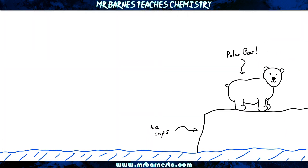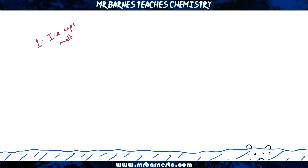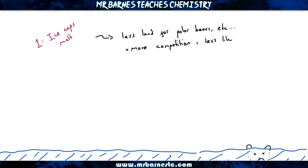Now we've looked at what we're doing to increase greenhouse gases in the atmosphere, we need to look at the effects. Number one is the ice caps melting. If the average temperature of the earth increases, our ice caps are going to melt. That means there's less land at the ice caps for polar bears and other animals to survive on, and there's going to be more competition for that land.